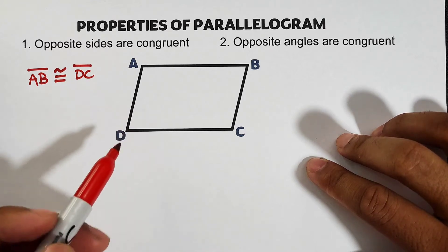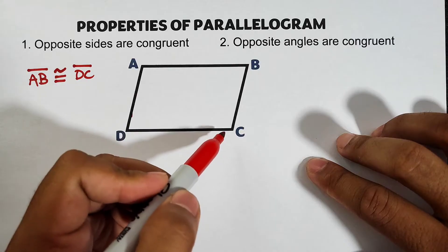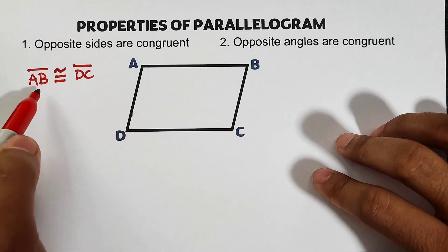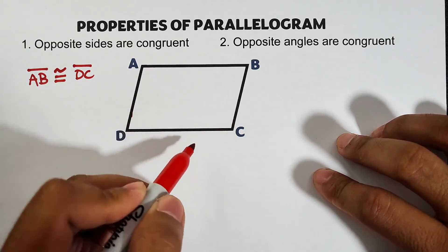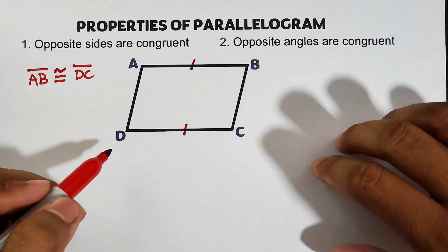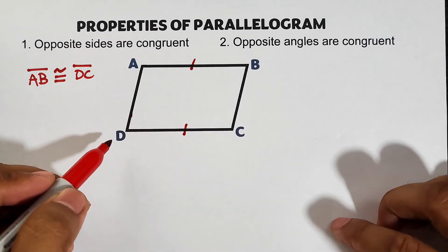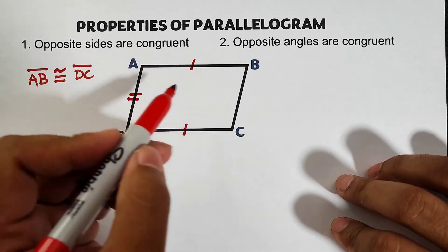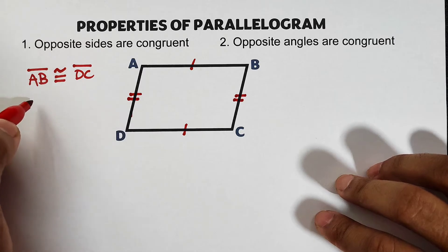The other pair of opposite sides is AD and BC. Note that if AB is congruent to DC, they should have the same tick mark symbol — meaning they have the same measurement. And side AD is congruent to side BC.